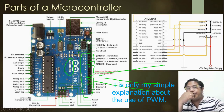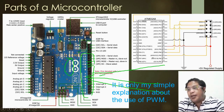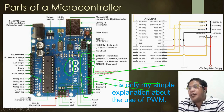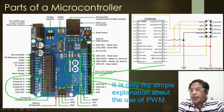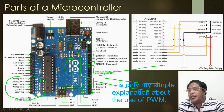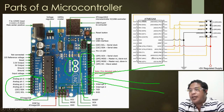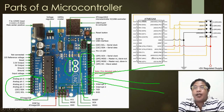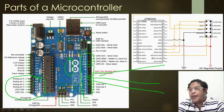Next are the analog input/output pins. There are six analog pins starting from A0 to A5 — A0, A1, A2, A3, A4, and A5. These pins are used for signals from sensors.